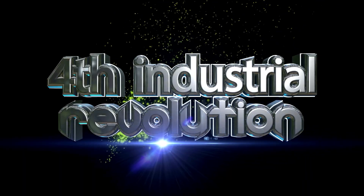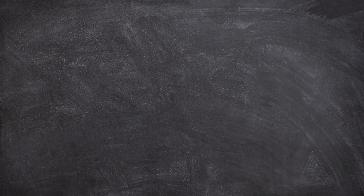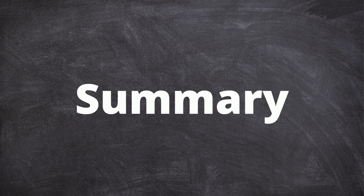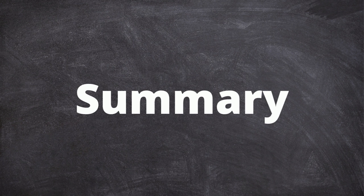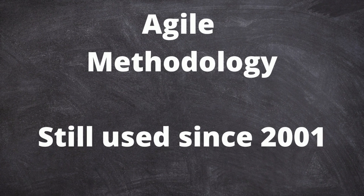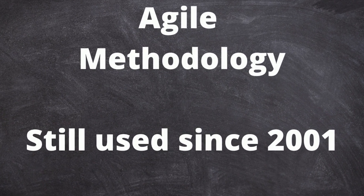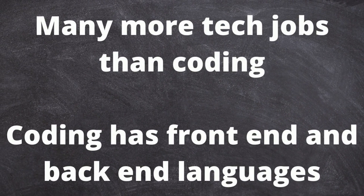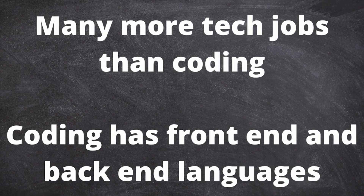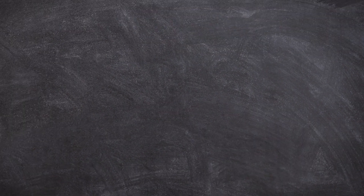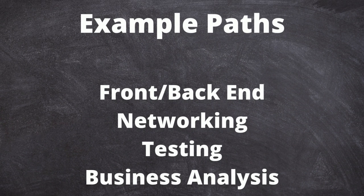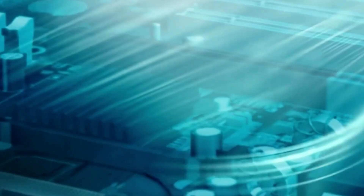To end this three-part series: we've talked about the Agile methodology currently being used since 2001, the different jobs in tech you can get involved in — not just coding — and that if you do code, you can do front-end, back-end, networking, testing, or be a business analyst. You can also go get an Agile certification. It's not going to be easy, but just know that today you learn more than you learned yesterday. Go step-by-step in tech.